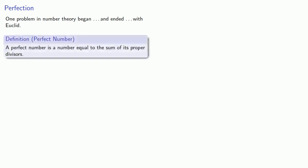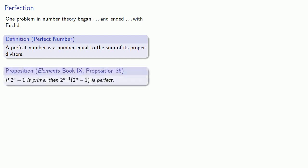One problem in number theory began, and to some extent ended, with Euclid. Remember that Euclid defined a perfect number to be a number equal to the sum of its proper divisors. And in the last proposition of Book 9, Euclid proved that if 2^n - 1 is prime, then 2^(n-1) times (2^n - 1) is perfect.